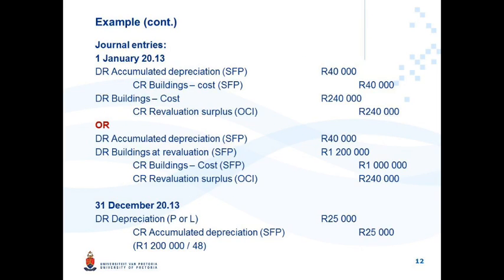The journal entry is dated 1 January 2013. First, eliminate accumulated depreciation: debit accumulated depreciation R40,000 and credit buildings cost price R40,000. After this journal, the asset is carried at R960,000. Then restate R960,000 to the revalued amount of R1,200,000: debit buildings R240,000 and credit revaluation surplus R240,000. The revaluation surplus is taken to other comprehensive income (OCI) — credit R240,000.